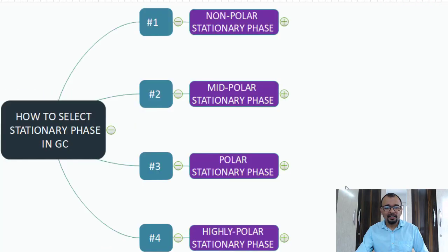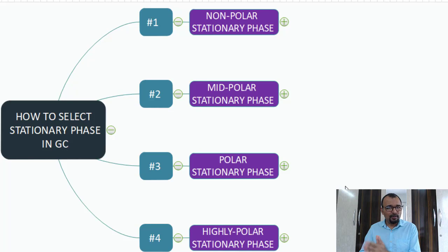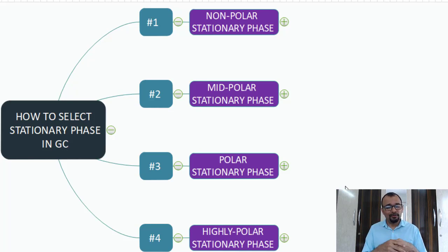There are four kinds of stationary phases we will cover: the first is the non-polar stationary phase, the second is the mid-polar stationary phase, the third is the polar stationary phase, and the fourth is the highly polar stationary phase.